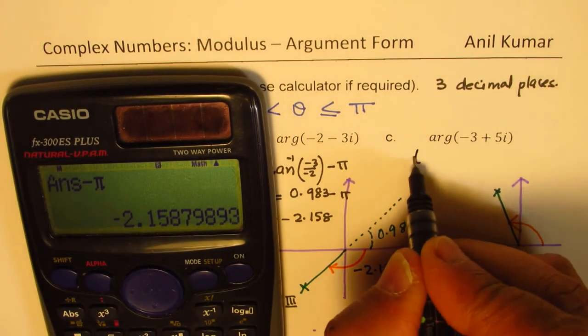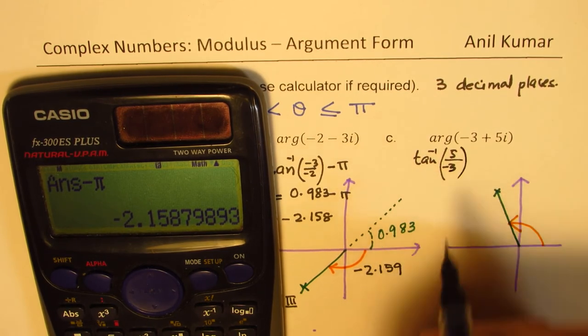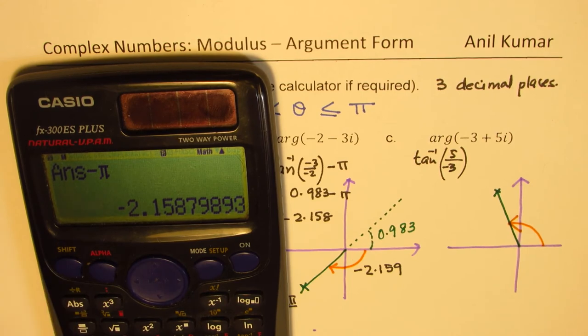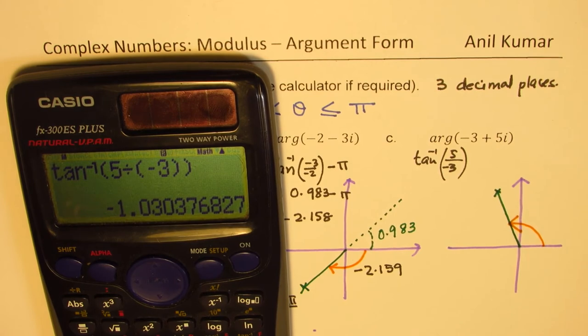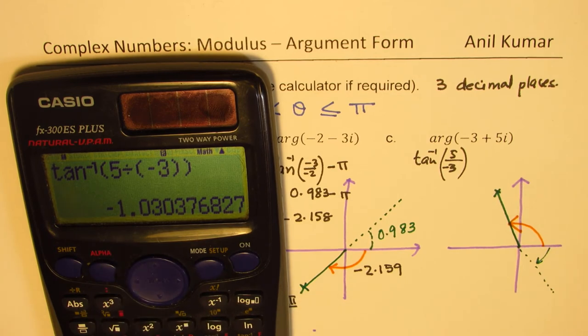So let's use the calculator. Find what is tan inverse of 5 over minus 3. So if I do shift tan inverse of 5 divided by, let me put it in brackets, minus 3. Two brackets. And then what do I get? I actually get minus 1.03. Now see, minus 1.03 is directing us to this place, which is not our answer.